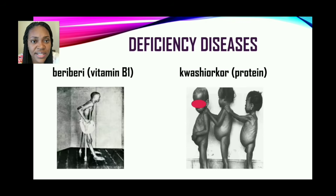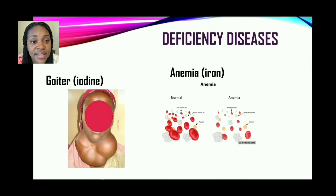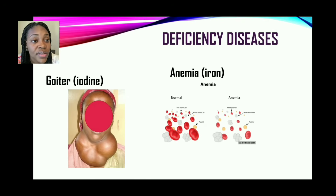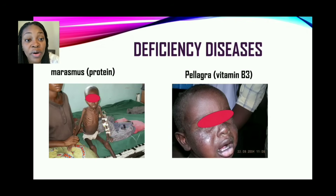Now let us look at these images. Image one is a patient who has beriberi. The next image shows children who have kwashiorkor. Next, this is what goiter looks like in severe cases when the thyroid gland is swollen. There is also anemia, when we speak of a lack of red blood cells in the body. There is also marasmus, which affects children and is caused by a lack of protein.